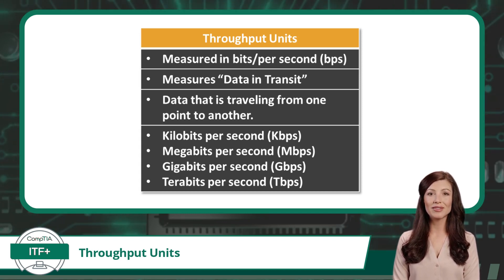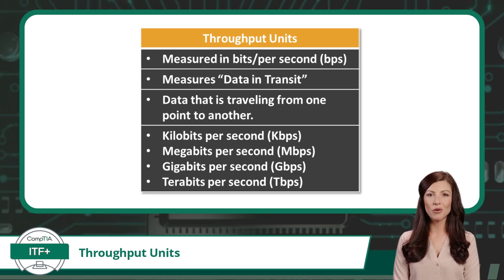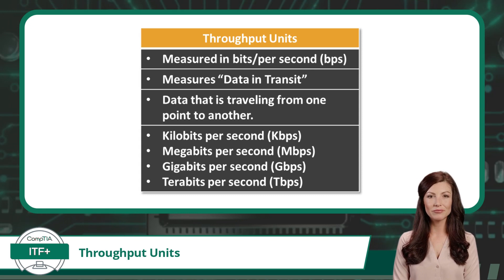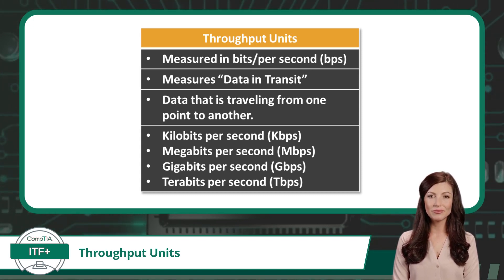Since a couple of bits is not even enough to store a single ASCII character code point, we will have to deal in much larger quantities of bits to meet today's demands. Some relevant throughput unit quantities include kilobits per second, which are quantities measured in thousands of bits per second — a relatively low throughput rate for modern computing.